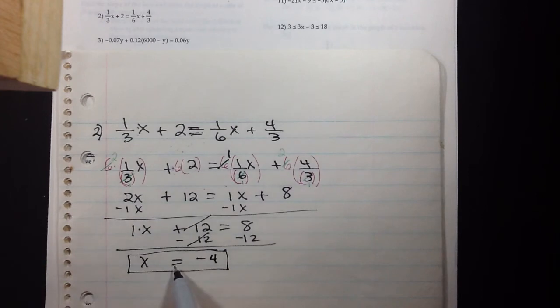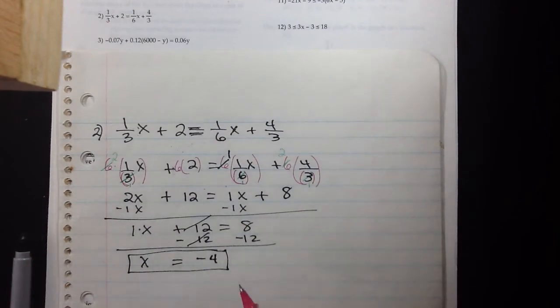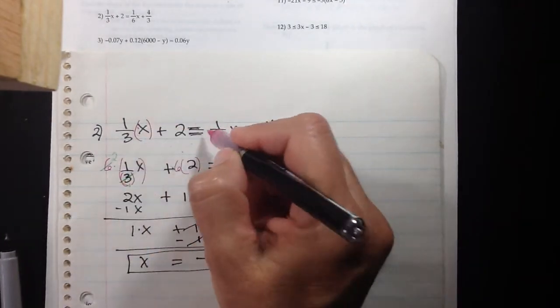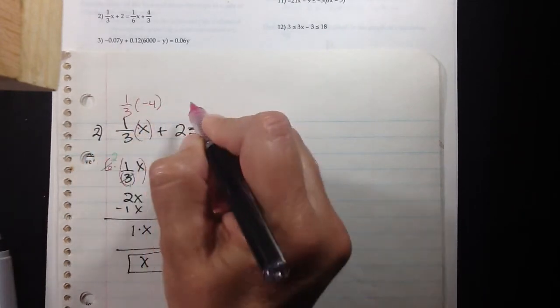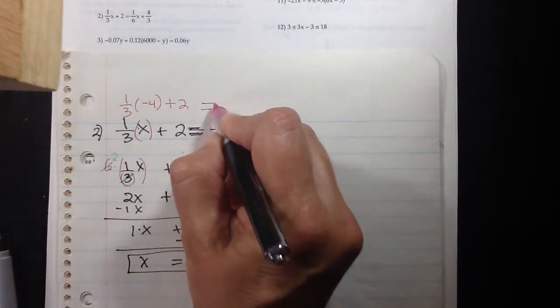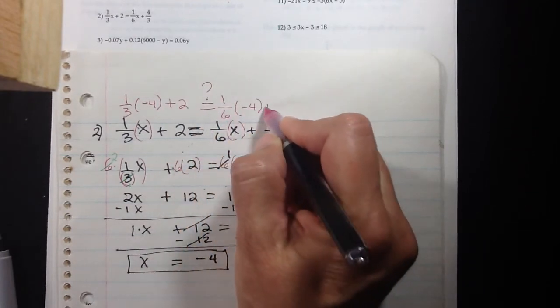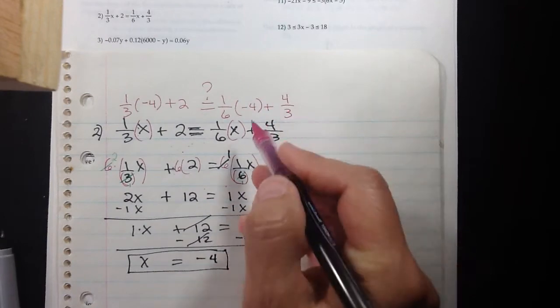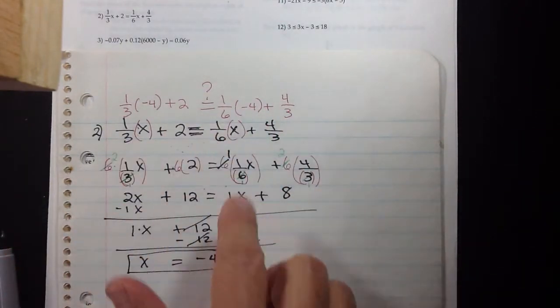If we had extra time, or it's probably best just to work through the test and then if you have some extra time go back and try plugging negative 4 back in to double check. Is it really true that 1/3 times negative 4 plus 2 is equal to 1/6 times negative 4 plus 4/3? Only if you had time would we check to make sure those values come out the same.